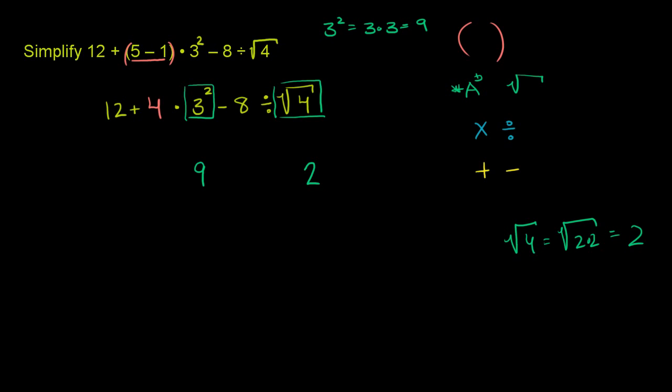And then we have everything else there. We have the 12 plus 4 times 9 minus 8 divided by 2 right there.